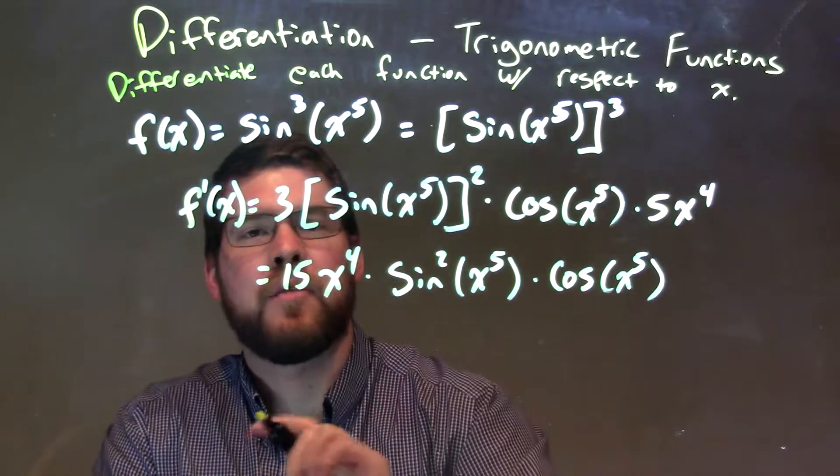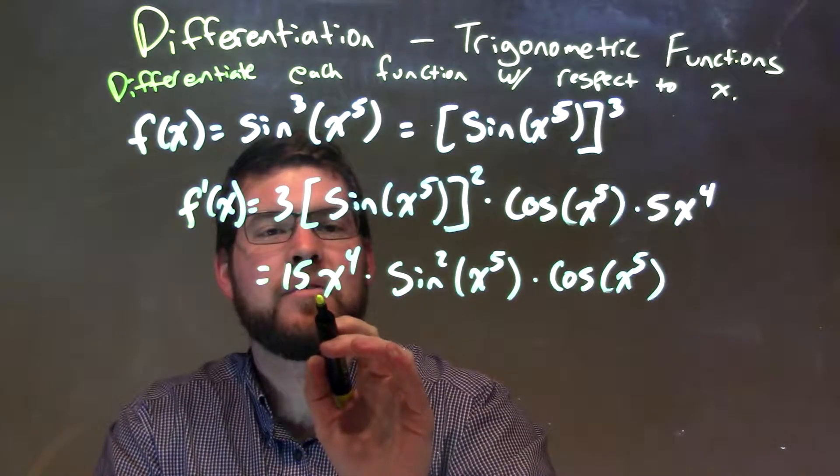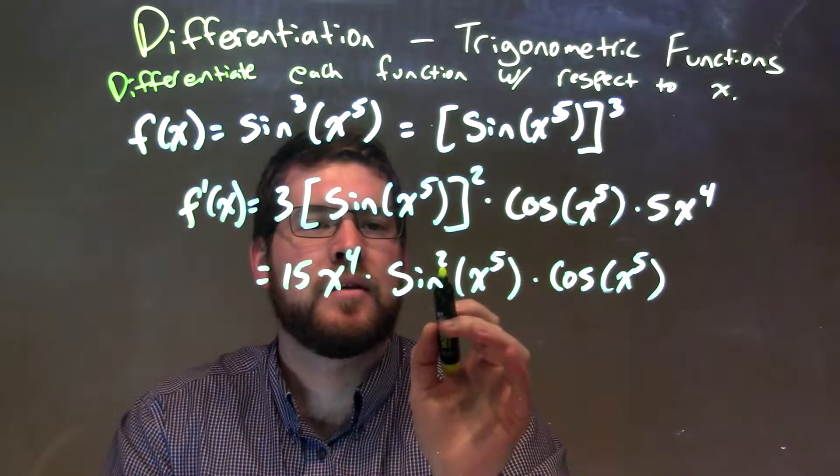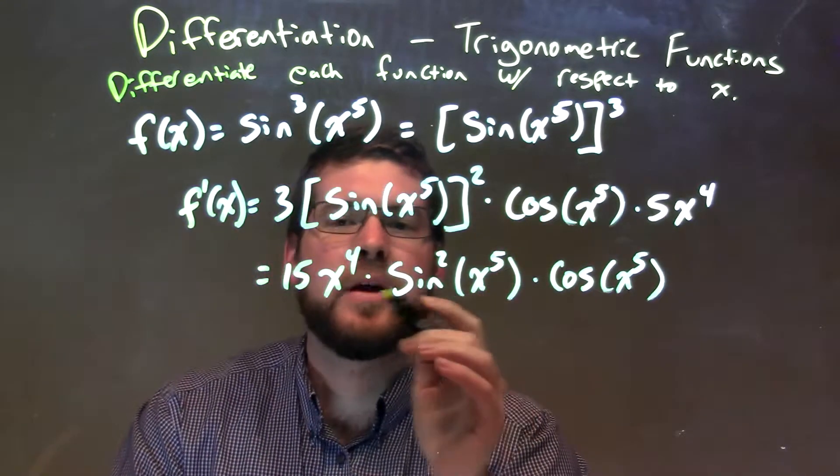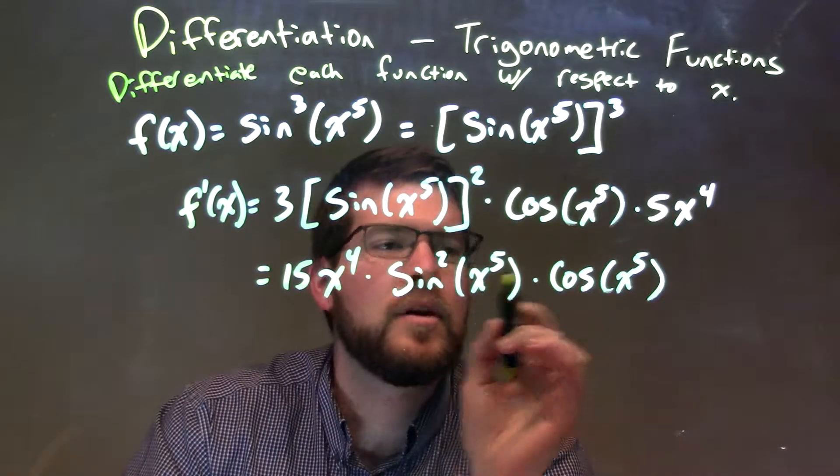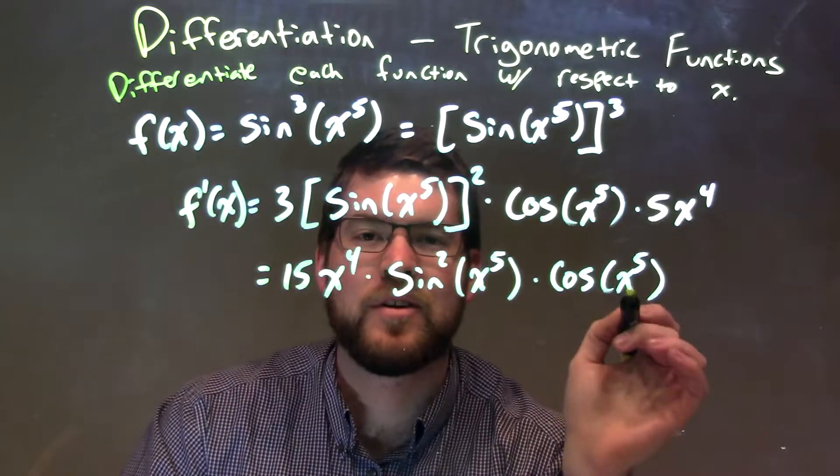Rearrange that: 5x to the fourth out front, multiply by 3 to get 15x to the fourth. And then this power here, that second power, should be written in proper notation. So our final answer is 15x to the fourth times sine squared of x to the fifth times cosine of x to the fifth power.